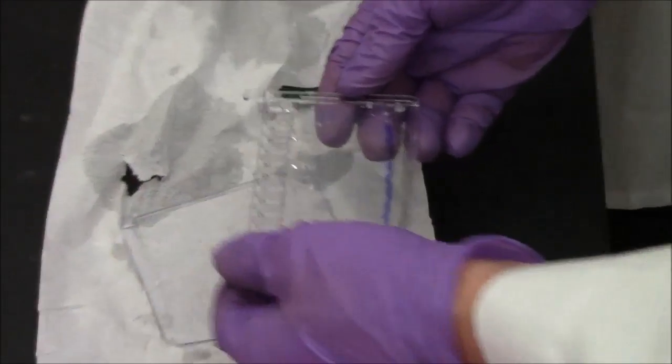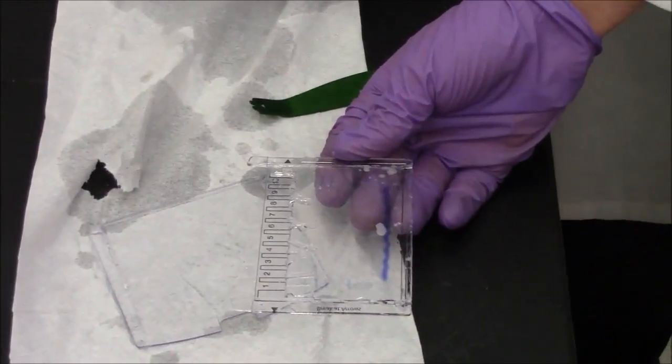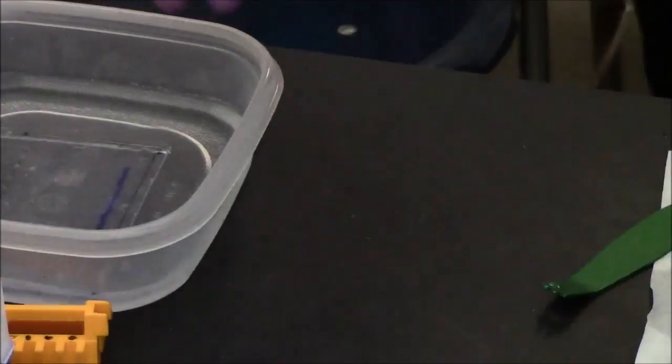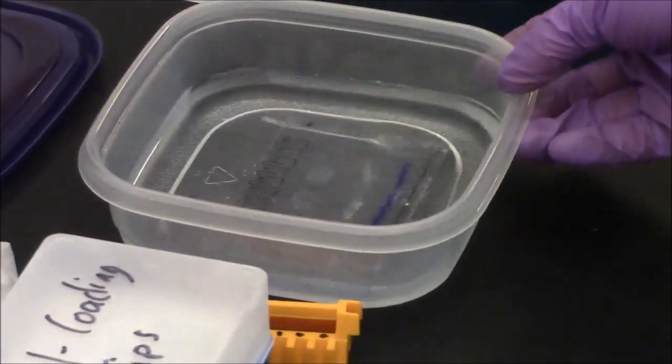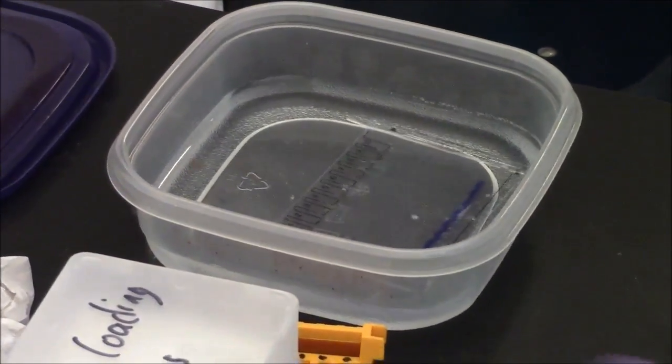Usually the gel will adhere to one of the two plates, doesn't really matter which one it sticks to, and then we want to float the gel off of the plate by immersing it in distilled water and gently shaking.